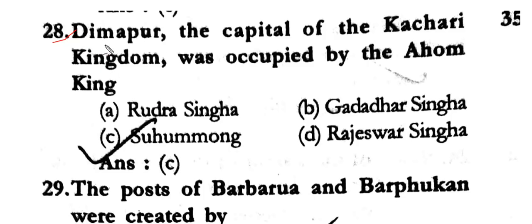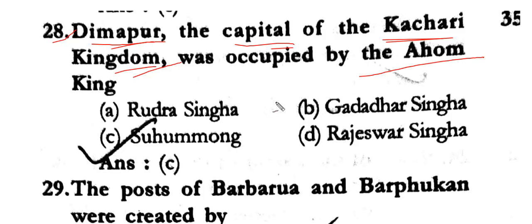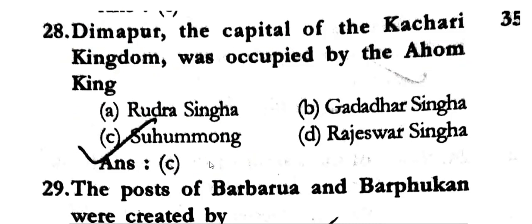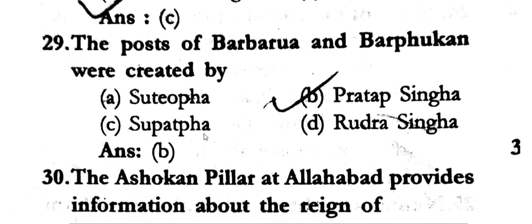The first question: Dimapur is the capital of the Kachari Kingdom. Dimapur was the Raajdhani (capital) of the Kachari Raja. Dimapur was occupied by the Ahom for the first time.